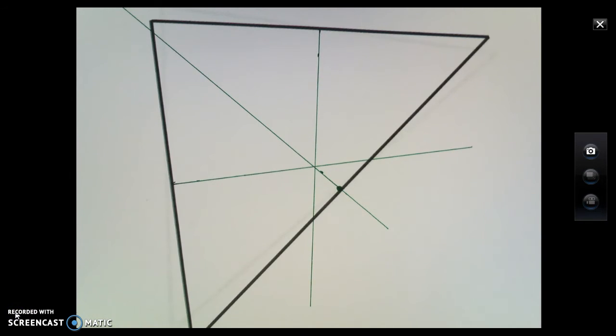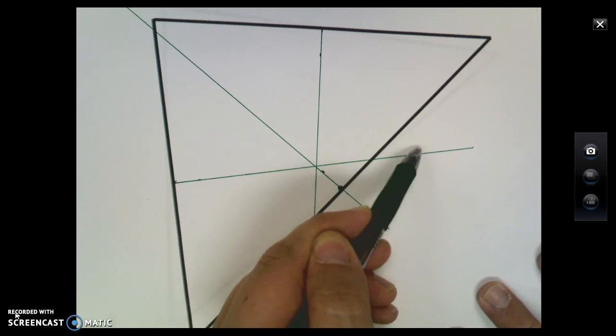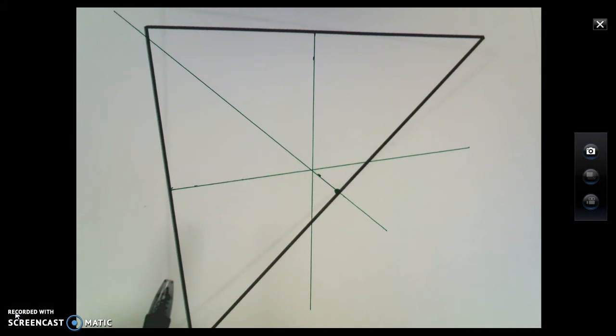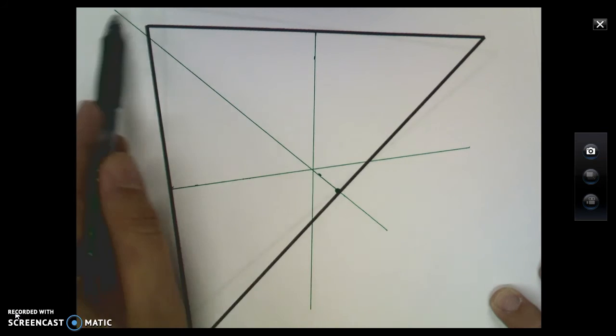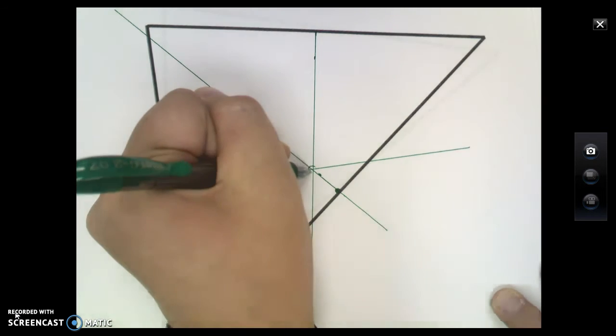So what I went ahead and did here is I constructed the other two perpendicular bisectors of my triangle. This was the first one we did together. I found the other midpoint, drew a perpendicular line. Found my other midpoint, drew another perpendicular line. And what ends up happening is, and this should be happening with yours, is that all three perpendicular bisectors are all going to meet in this one place right here.